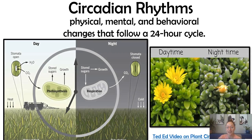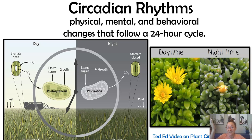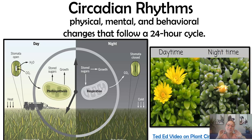Plants also have circadian rhythms. Plants do photosynthesis only when it's daytime and there's light, so it makes sense that when light shines on plants, that turns on gene expression to make the materials necessary for photosynthesis during daytime.